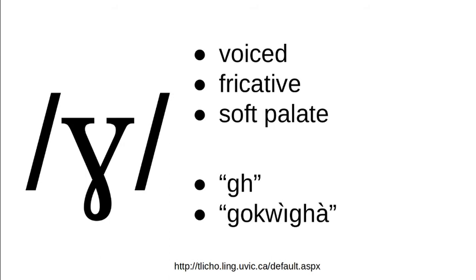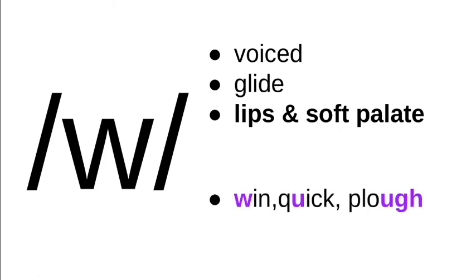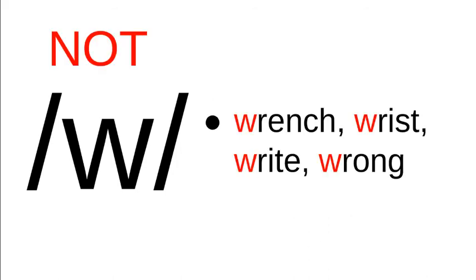The next sound is one we already dealt with in the video on sounds produced at the lips. The W sound is a voiced glide produced in two places at once — the lips and the soft palate. It's normally spelled with a W. The main thing to watch out for is silent W's at the beginnings of words in English.